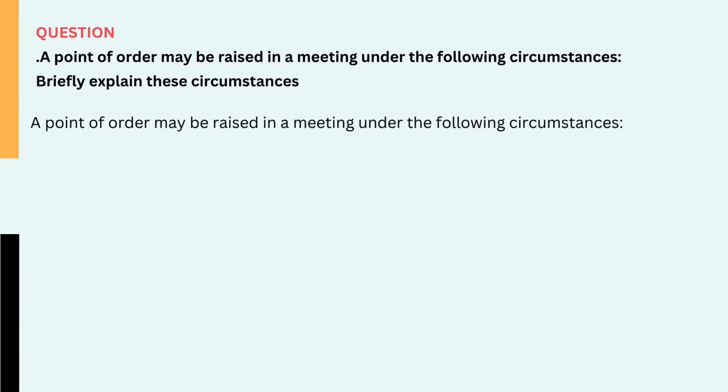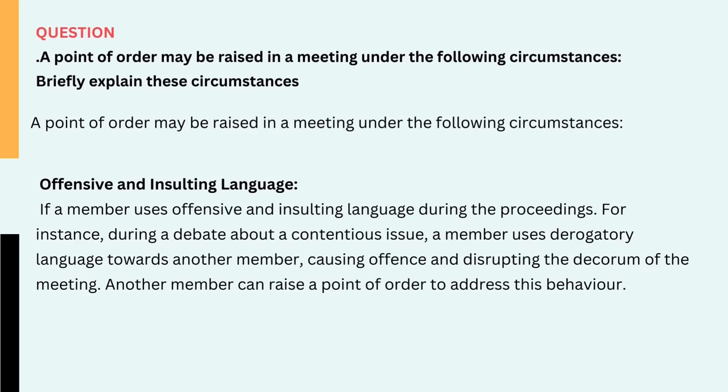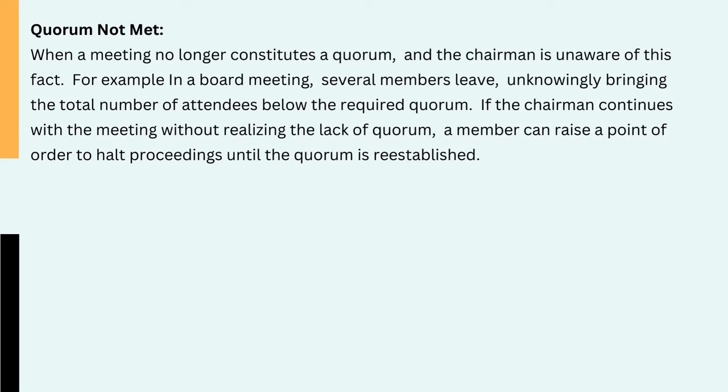Question: A point of order may be raised in certain circumstances in a meeting. Briefly explain these circumstances. A point of order may be raised in a meeting under the following circumstances: 1. Offensive and insulting language — if a member uses offensive and insulting language during the proceedings. For instance, during a debate about a contentious issue, a member uses derogatory language towards another member, causing offence and disrupting the decorum of the meeting. Another member can raise a point of order to address this behaviour. 2. Quorum not met — when a meeting no longer constitutes a quorum and the chairman is unaware of this fact. For example in a board meeting, several members leave, unknowingly bringing the total number of attendees below the required quorum. If the chairman continues with the meeting without realising the lack of quorum, a member can raise a point of order to hold proceedings until the quorum is re-established.